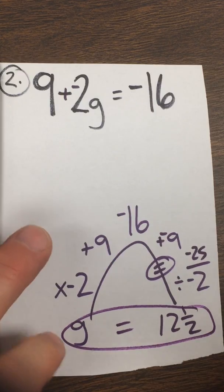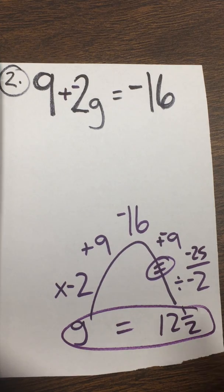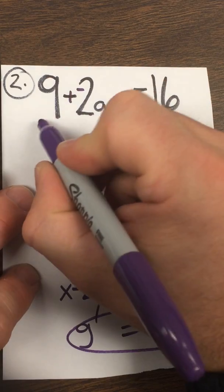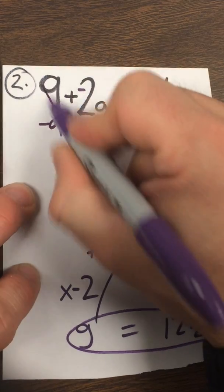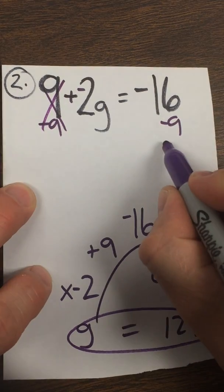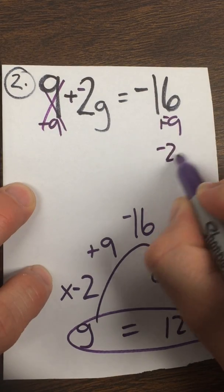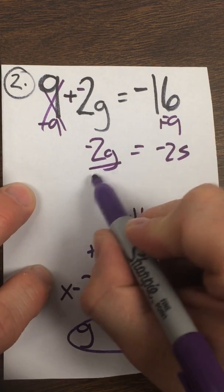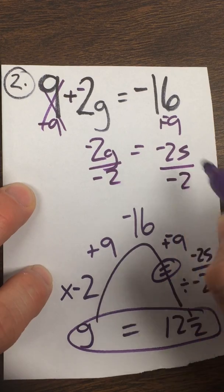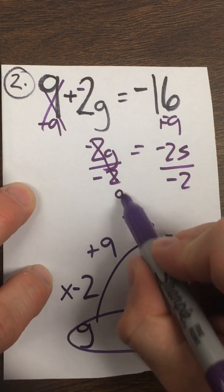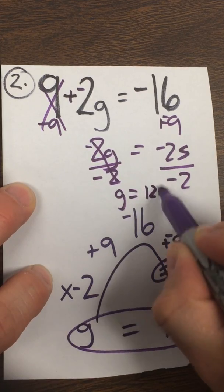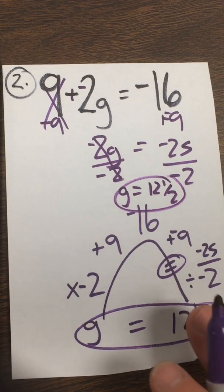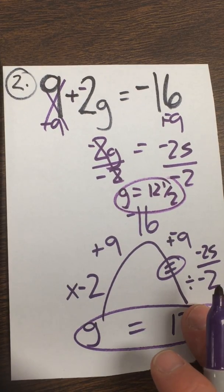g equals 12 and one half. If I did it with cancellation, same thing. I get negative 25 equals negative 2g. Divide by negative 2 to undo what they did — those cancel out, and you're left with g equals 12 and one half. Either way you're going to get to 12 and one half; they're the same math, just a little bit different way.